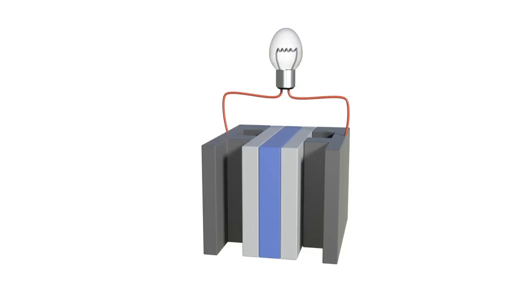In a polymer electrolyte fuel cell, hydrogen and air are fed to the cell. Electrochemical reactions take place to generate water, electricity, and heat.